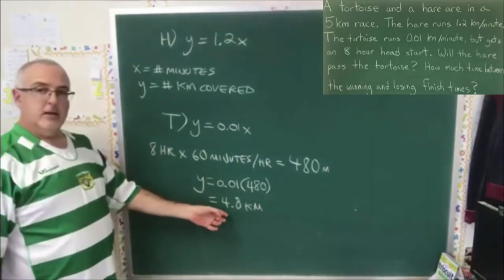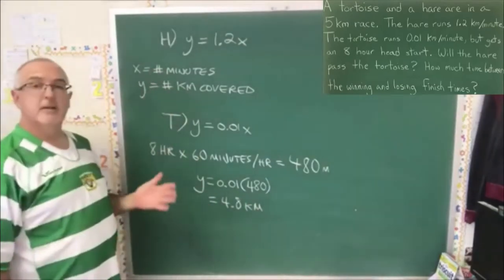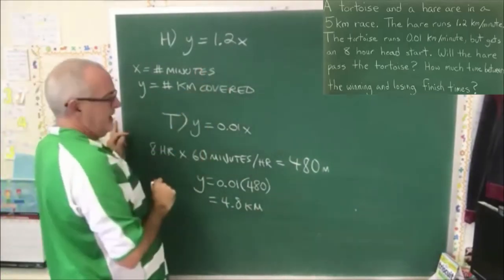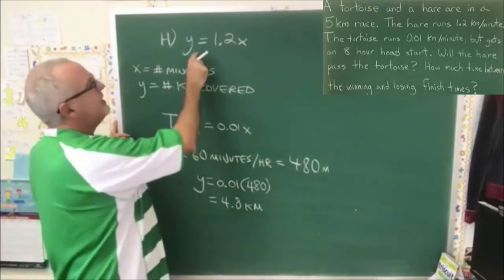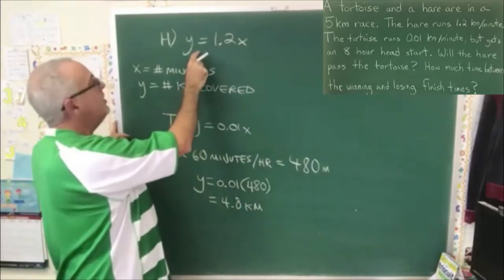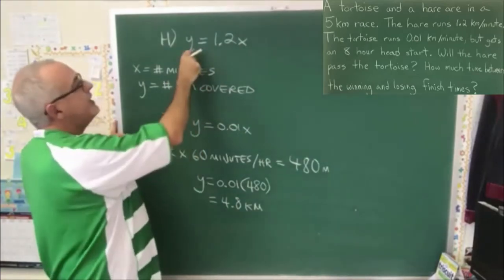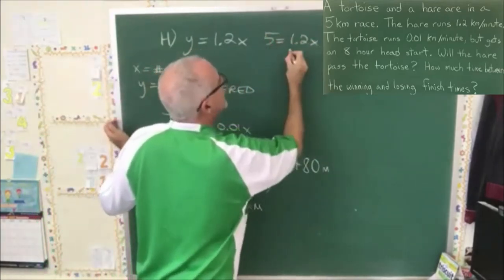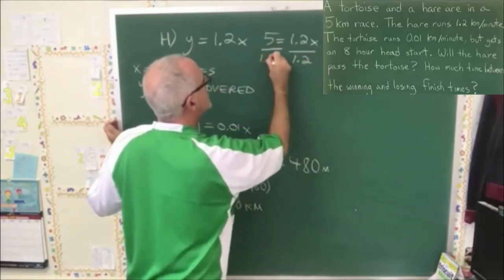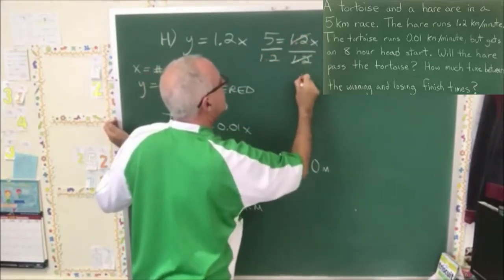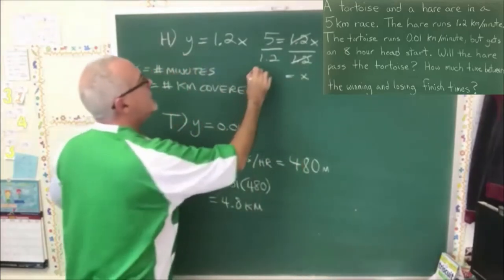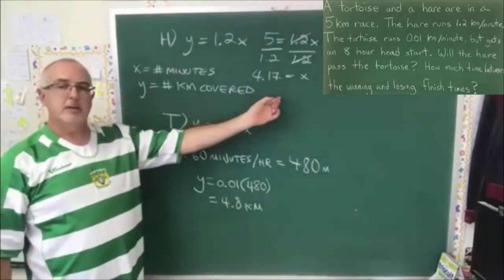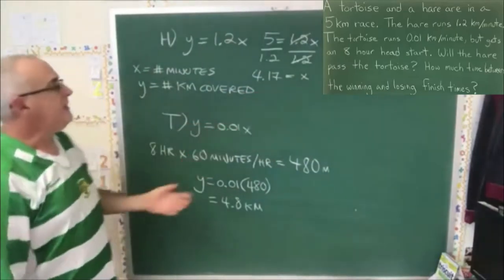So the tortoise has actually covered 4.8 kilometers before the hare even starts. Now let's work with the hare some more. The hare has to cover 5 kilometers, so I'm going to put y equals 5 into that equation. I have 5 equals 1.2x, I divide both sides by 1.2, these cancel, x is equal to 4.17. And x is the number of minutes — the hare is taking 4.17 minutes to cross the finish line.